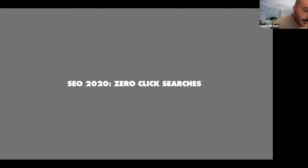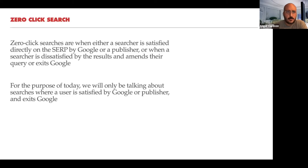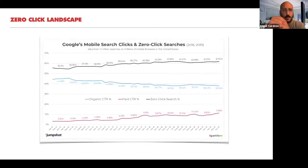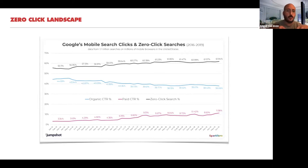There's a recent trend called zero click search. What that means is a searcher looks for information, Google serves the answer, and the user leaves without ever visiting a website — they exit Google without clicking through. This graph shows organic clicks as a blue line in the middle, and it's been decreasing for the past two years, meaning when somebody searches organically, most of the time they're not clicking to websites anymore.